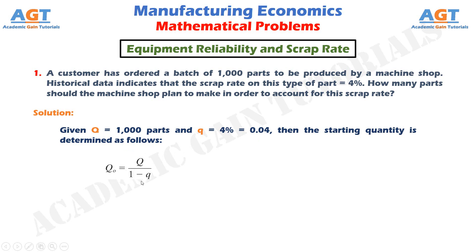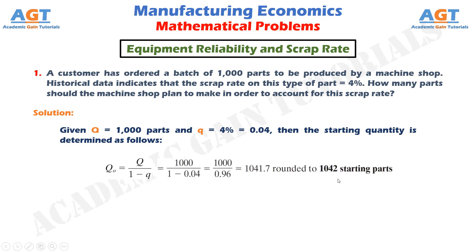The starting quantity Q₀ equals required quantity divided by (1 minus scrap rate). Putting in the values, we obtain 1041.7, rounded to 1042 starting parts. So the machine shop should plan to make 1042 starting parts in order to account for the scrap rate of 4%.